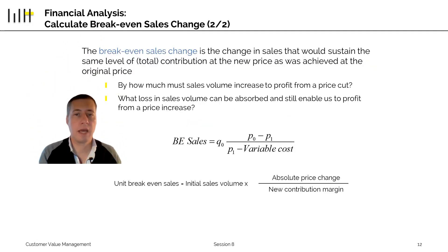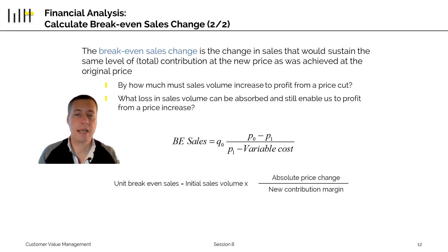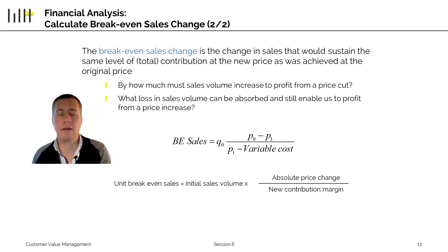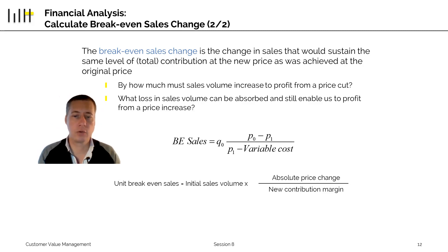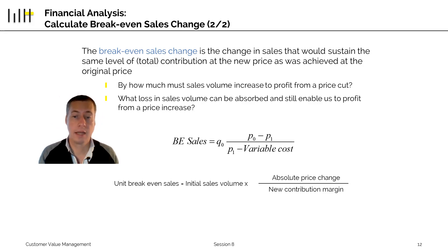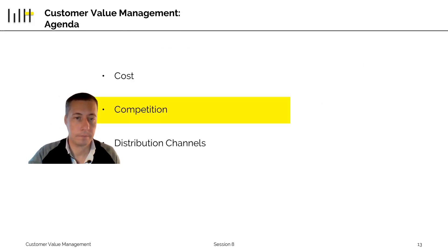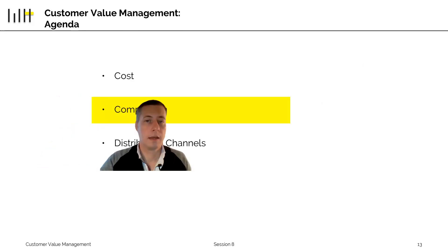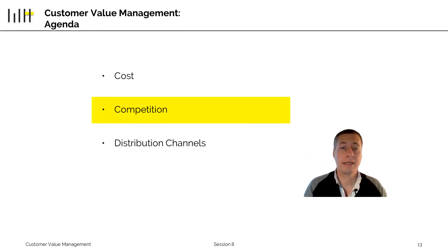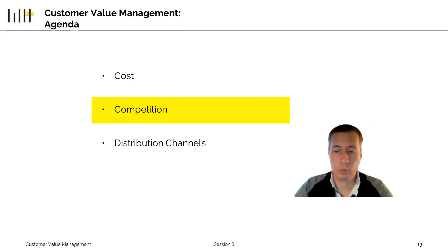What we explained graphically can be put into an equation. The break-even sales change is the change in sales necessary to maintain the same total level of contribution when price changes. You calculate it by taking the initial sales volume — 1,000 in our case — times the absolute price change ($10 minus $9), divided by the new contribution margin. In the next section, we talk about competition and how prices are impacted not only by what you want to do, but also by what your competitors want to do.